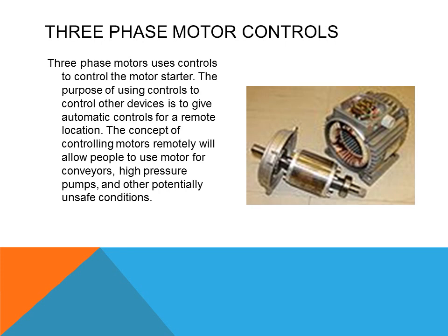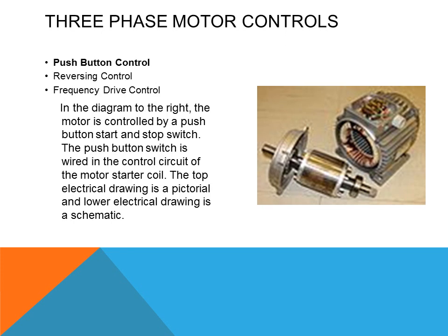Three-phase motors use controls to control the motor starter. The purpose of using controls to control other devices is to give automatic control for a remote location. The concept of controlling motors remotely allows people to use motors for conveyors, high-pressure pumps, and other potentially unsafe conditions. In the diagram to the right, the motor is controlled by a push button start and stop switch. The push button switch is wired into the control circuit of the motor starter coil. The top electrical drawing is a pictorial and the lower electrical drawing is a schematic — the schematic is a simplified, easy-to-understand representation of how current flows, while the pictorial shows exactly how all the components are connected.